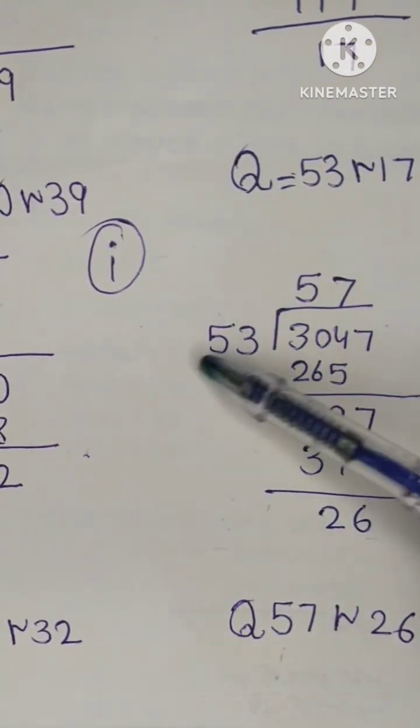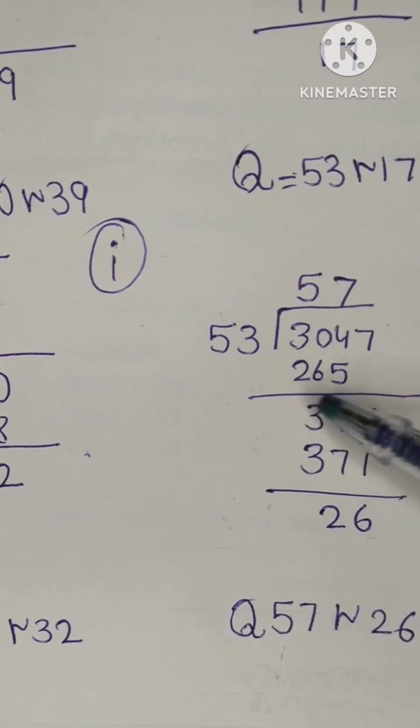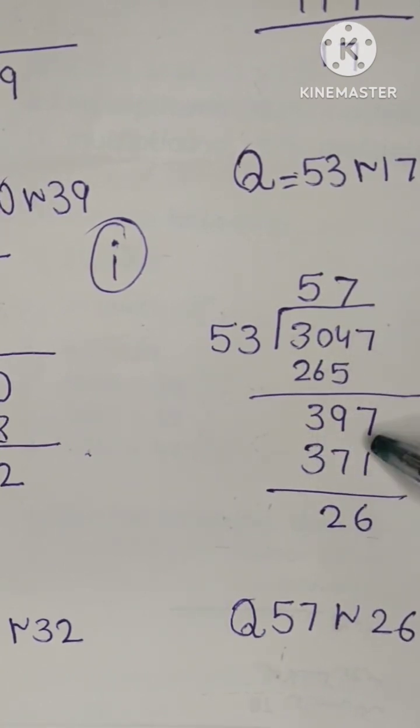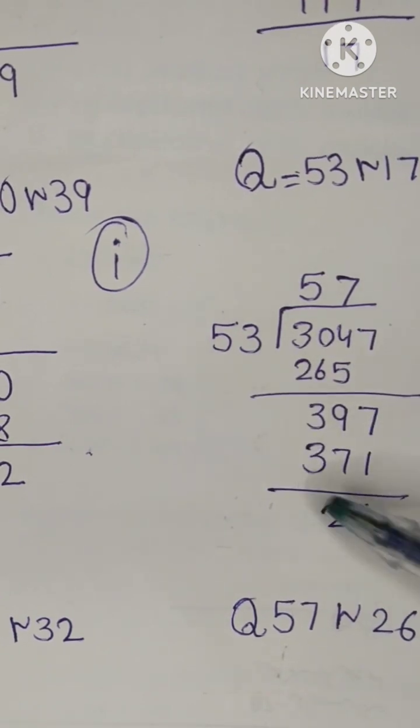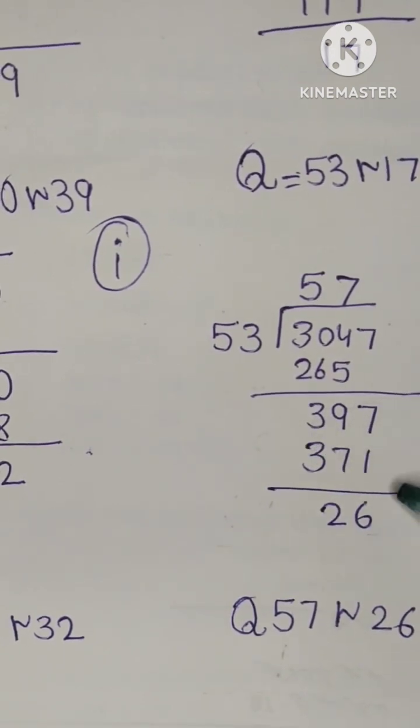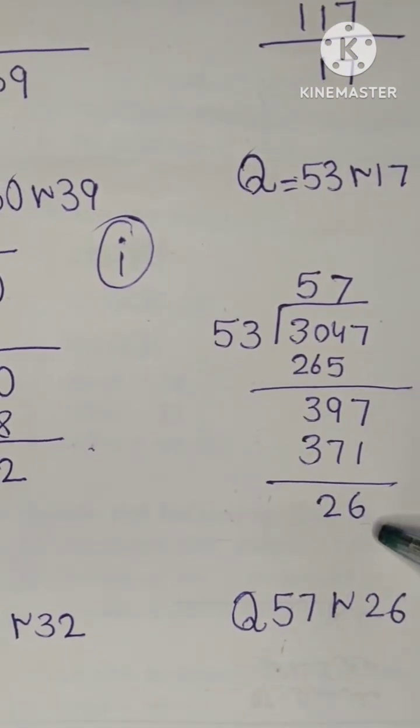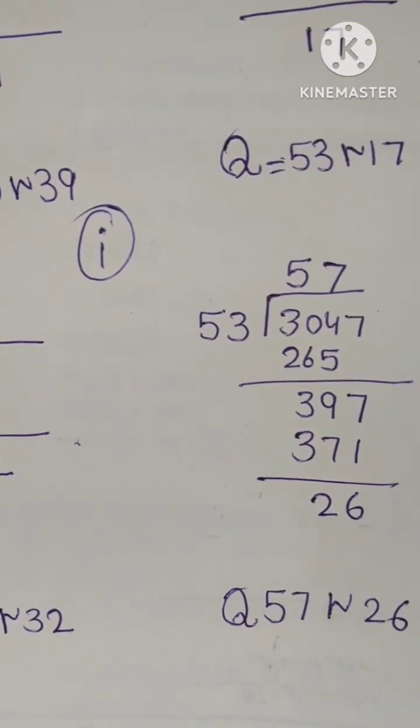57 into 304 or 753. 5 is 265, 304 minus 265 is 39, 7 drop. 53 into 7 is 371, we have answer. Quotient 57 and remainder 26.